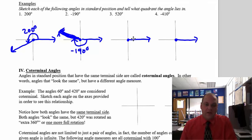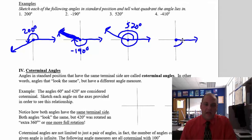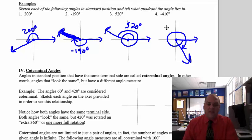For 520 degrees: 90, 180, 270, 360, 450 — and then stop before 540, right about there. That's 520. For negative 410: negative 90, negative 180, negative 270, negative 360, and then another 50 degrees brings you to right about there. That is a negative 410-degree angle.